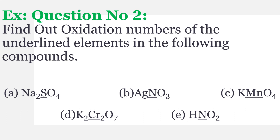Aapki exercise mein question number two jo long questions hain, unme question number two jo hai woh inhi numericals pe mushtamil hai, jis mein humne oxidation number hi find out karna hai. Yeh questions aur jo examples hain aapne bahut acchi tareeqe se karni, kyunki yeh short question ki form mein paper mein aata hai. Question number two: find out oxidation numbers of the underlined elements in the following compounds. Yahan pe aapko five compounds diye gaye hain aur unmen kuch elements ko underline kiya gaya hai — jo underlined element hai uska aapne oxidation number find out karna hai. Toh hum sabse pehle first ko karte hain.